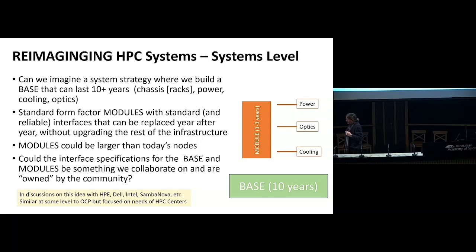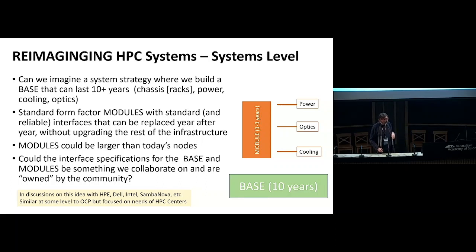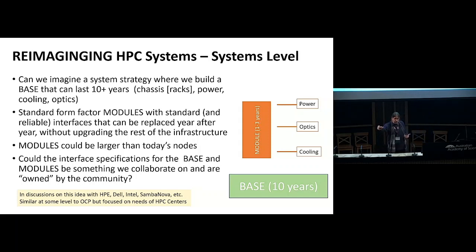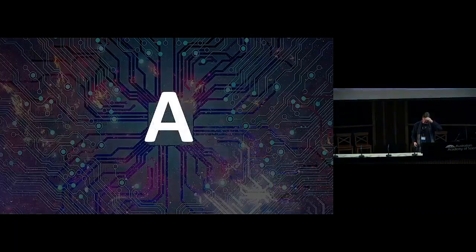Another concept we've been discussing with vendors is how to move the hardware ecosystem to something more sustainable — not just replacing power sources, but making the hardware environment more sustainable. The model is an infrastructure that could last 10 years: racks, power, cooling, maybe passive optics, with technology building blocks that can be dropped in and upgraded frequently against these standard modules. Think of building blocks with just three connections — power, cooling, and optics — with the rest of the infrastructure standardized. If we're going to build a long-term civilization, we have to move to technology like this and stop doing forklift rack upgrades all the time.